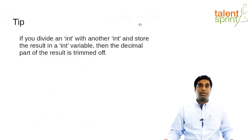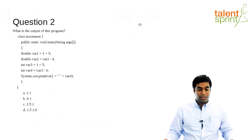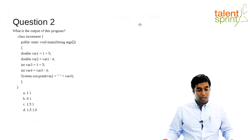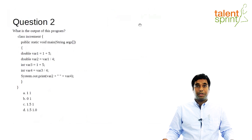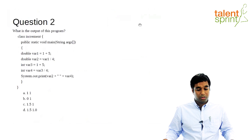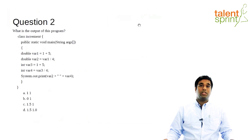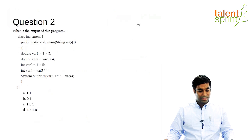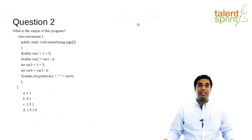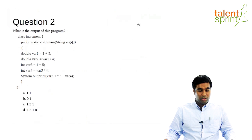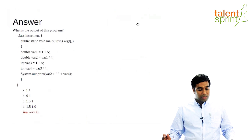The tip says: if you divide an integer with another integer and store it in an integer variable, then the decimal part of the result is trimmed off. After seeing the tip, Akash still says C, Badeep says C. So let me just show you the answers — the answer is C.